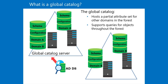The global catalog does not contain all the attributes for each object. Instead, the global catalog maintains the subset of attributes that are most likely to be useful in cross-domain searches. These attributes include given name, display name, and mail. You can modify the set of attributes replicated to the global catalog by modifying the partial attribute set, PAS, in the schema.